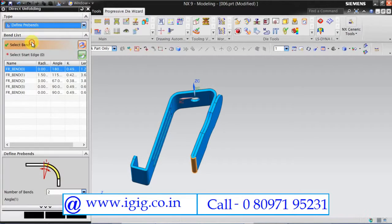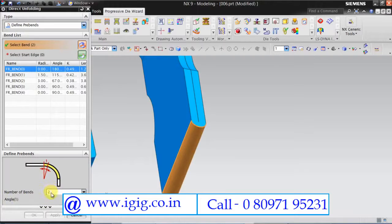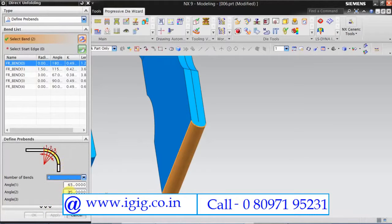So now we have to introduce pre-bends. As I said earlier this is done in 4 stages of 45 degree. So you can select any of the edge.